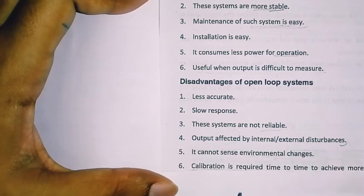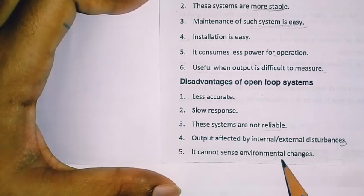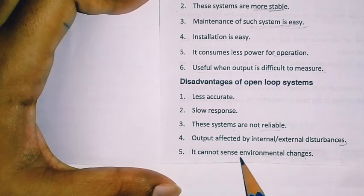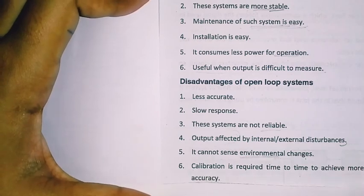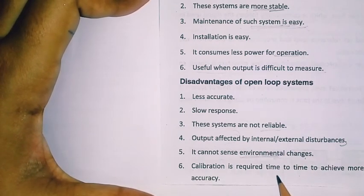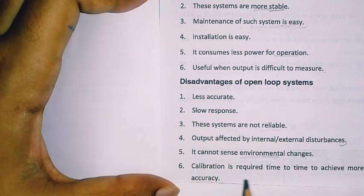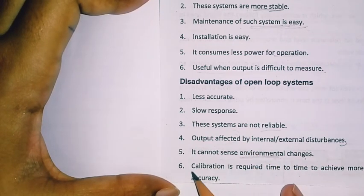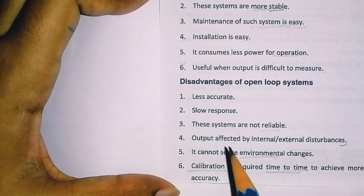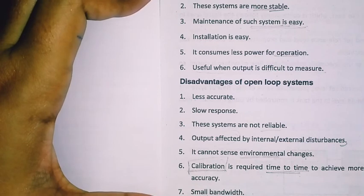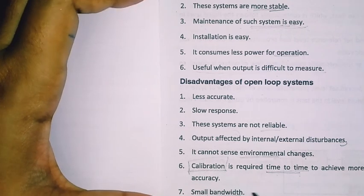Further disadvantages: it cannot adapt to environmental changes. Calibration is required from time to time to achieve more accuracy — if you need higher accuracy in an open loop system, you must calibrate it periodically. Also, the bandwidth is small.